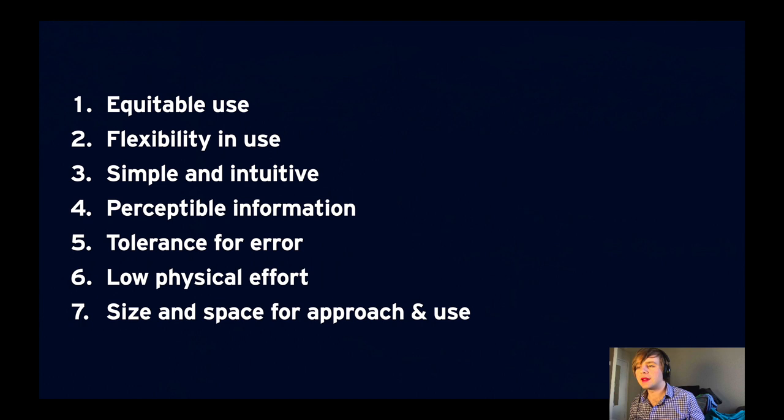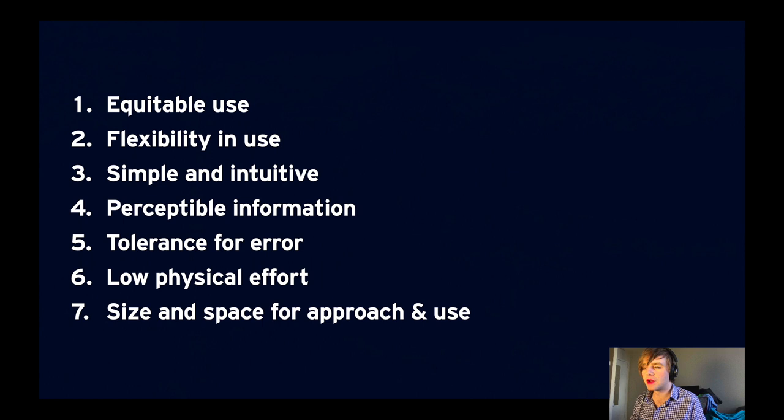It lays out seven principles for things that have been designed universally. The first is equitable use — that the design is useful and marketable to people with diverse abilities. Second, flexibility in use — the design accommodates a wide range of individual preferences and abilities. Third, it's simple and intuitive — the use of the design is easy to understand regardless of the user's experience, knowledge, language skills, or even their current concentration level. Number four is that the information in the design is perceptible — it communicates the necessary information effectively to the user.